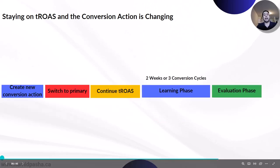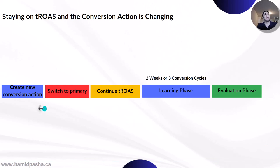This is how the workflow looks like. First, you create the new conversion action. Then, you switch the conversion action at campaign level to primary. You continue bidding toward tROAS. You should expect two weeks or three conversion cycles of learning phase, and then you can start evaluating performance.